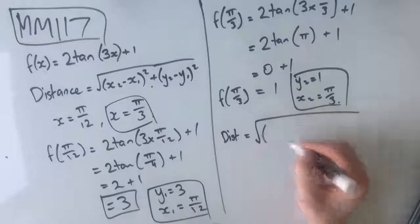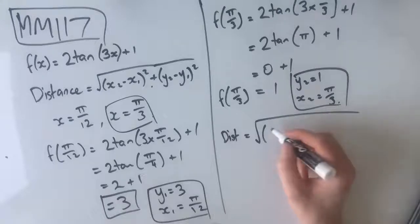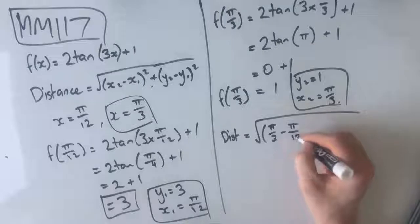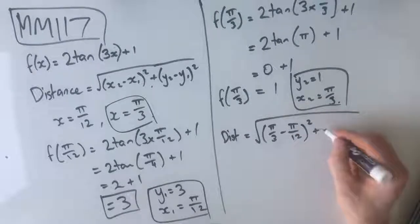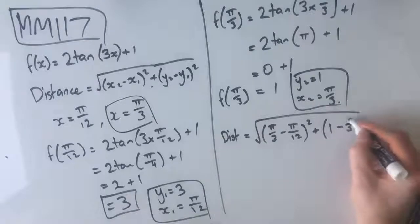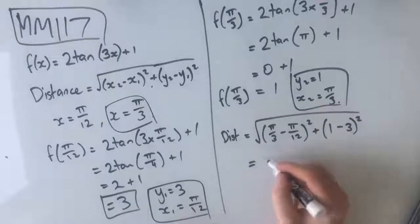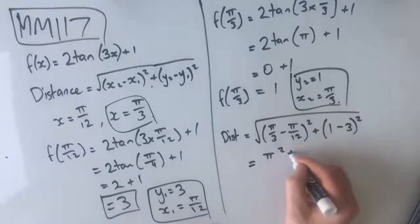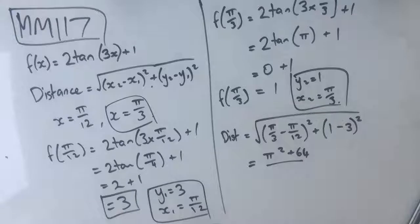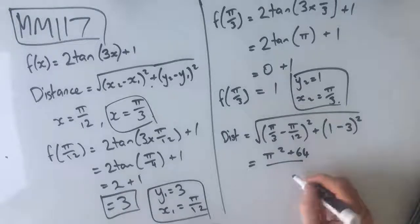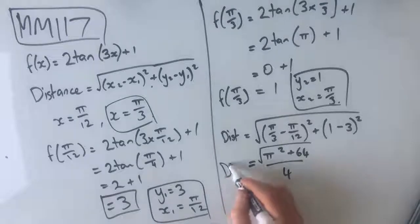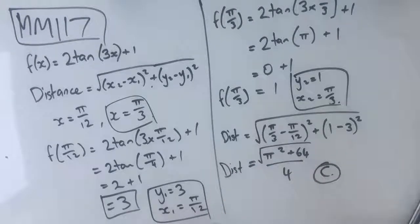equal to the square root of x2, so π/3 minus x1, which is π/12, squared plus y2, 1 minus 3 squared. And this gives us the square root of π squared plus 64 over 4. So this is our distance, and this is our answer for c.